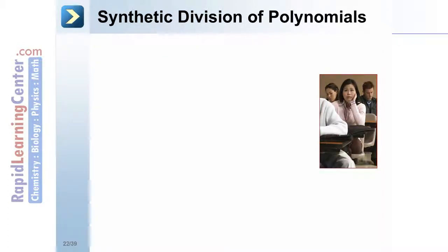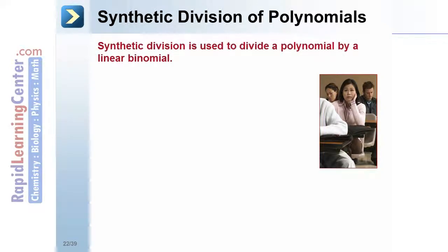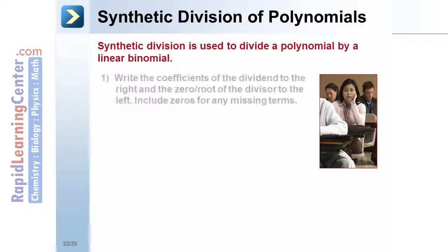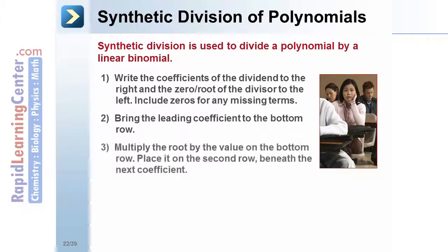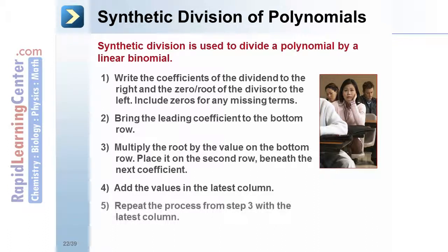Synthetic division of polynomials. Synthetic division is used to divide a polynomial by a linear binomial. Steps: 1. Write the coefficients of the dividend to the right and the zero or root of the divisor to the left. Include zeros for any missing terms in the dividend. 2. Bring the leading coefficient to the bottom row. 3. Multiply the root by the value on the bottom row; place it on the second row beneath the next coefficient. 4. Add the values in the latest column. 5. Repeat the process from step 3 with the latest column. 6. Write out the answer working right to left from your remainder to the highest degree.